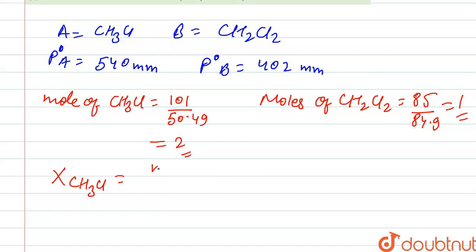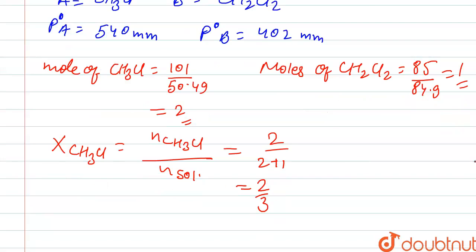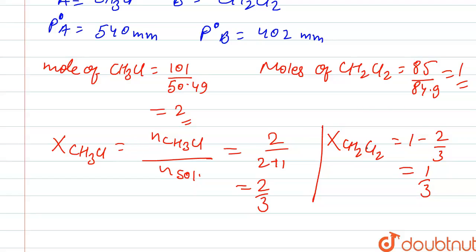We calculate the mole fraction of both compounds. The mole fraction of CH₃Cl equals the moles of CH₃Cl divided by the total moles of solution. Total moles = 2 + 1 = 3, so the mole fraction of CH₃Cl is 2/3. The mole fraction of CH₂Cl₂ is 1 minus 2/3, which equals 1/3, since the sum of mole fractions must equal 1.